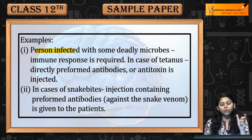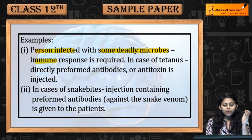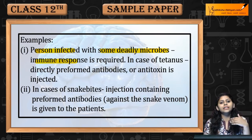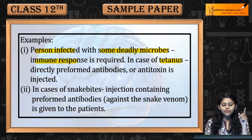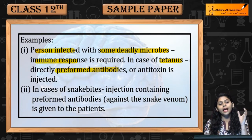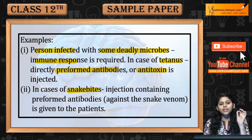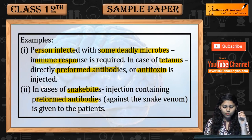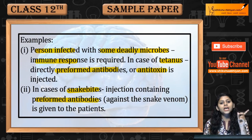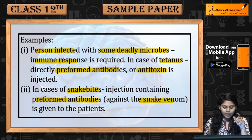When persons are infected with some deadly microbes, an immediate immune response is required. In case of tetanus, directly preformed antibodies or antitoxins are injected. In case of snake bite, an injection containing preformed antibodies against the snake venom is given to the patient.